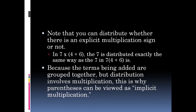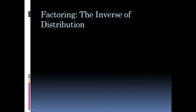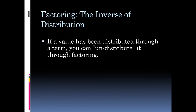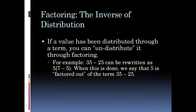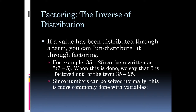Let's examine the inverse of distribution: factoring. If a value has been distributed through a term, you can undistribute it through factoring. For example, 35 minus 25 can be rewritten as 5 parentheses 7 minus 5 in parentheses. When this is done, we say that 5 is factored out of the term 35 minus 25. This is more commonly done with variables: AB plus AC equals A parentheses B plus C in parentheses, where A is factored out of the quantity B plus C.